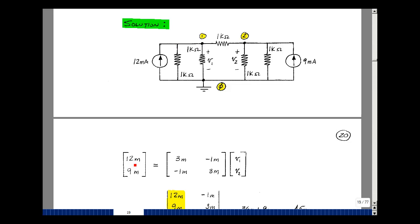For row 2, column 2, that's the sum of the conductances at node 2: 1 milli plus 1 milli plus 1 milli, so 3 milli-mhos. Between nodes 2 and 1 is the same as between 1 and 2 — 1 over 1,000 — but we negate that. The current entering this node is 9 milliamps. Those are my two equations and two unknowns, written by inspection. This is really how software works — you develop algorithms that you can just execute.